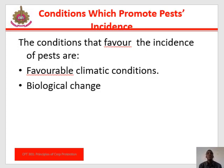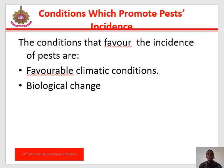When environmental conditions are favorable, an ecological change can convert a harmless organism into a pest. The major ecological reasons for an organism developing pest status include change in cultural practices, change in the character of the food supply, and introduction to new environments.